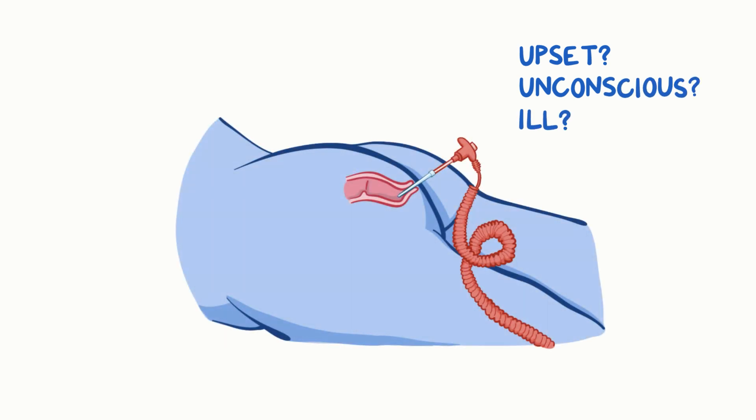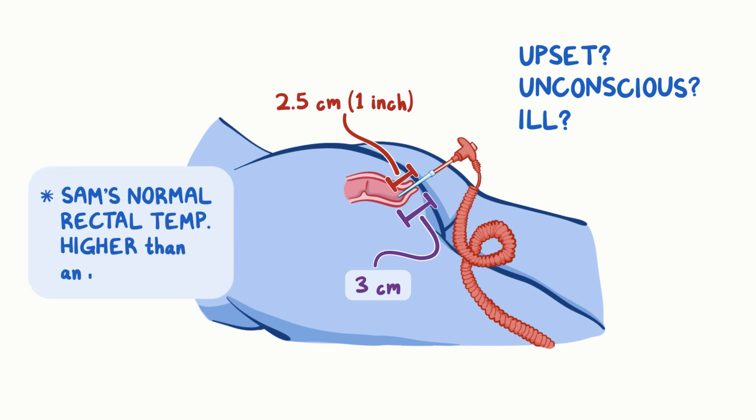Is Sam upset, unconscious, or ill? Insert the lubricated red-tipped electronic probe 2.5 centimeters or 1 inch into his rectum. Don't go further. Sam's colon curves posteriorly at 3 centimeters. Sam's normal rectal temperature is higher than an adult's.